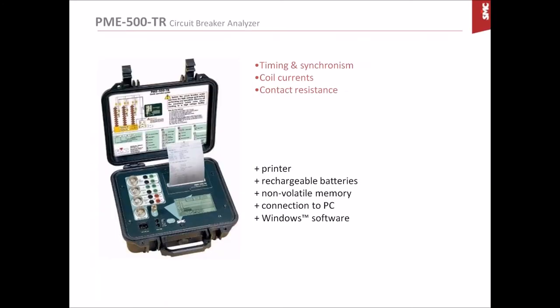This is the instrument we are using, the PME500TR. This instrument is basically a precision timer. It is able to register timestamps for any change in the main contacts and two auxiliary contacts, with a resolution of one tenth of a millisecond. It will also make a graph and record coil currents sampled at the rate of 10 kHz. It will also measure the contact resistance in the main contacts when they are closed. You also have built-in batteries, which allow you to use the unit with no mains AC. It has onboard memory to save the results.